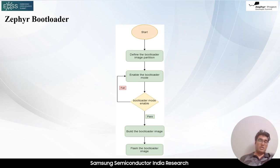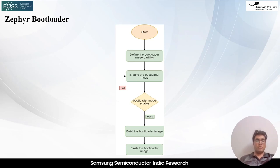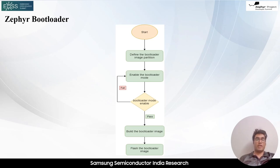Next is bootloader configuration. The bootloader may have parameters such as boot delay, boot source selection, or communication interface. It reads these configuration options either from a dedicated configuration area in non-volatile memory, for example flash, or through other means to determine the boot area. Then comes boot source selection: the bootloader determines the source from which to load the main application. Common options include external flash memory, internal flash memory, or an external storage device like an SD card or a network interface.